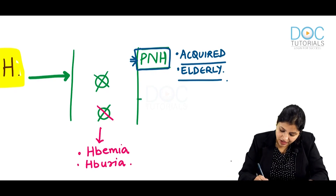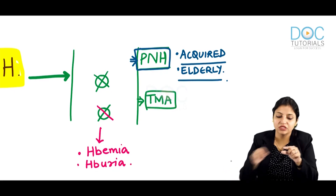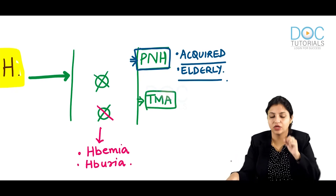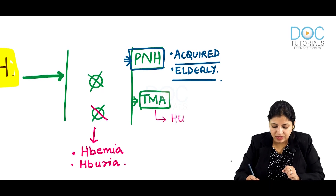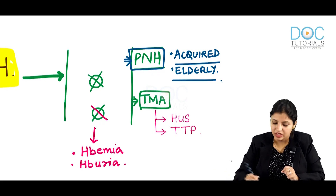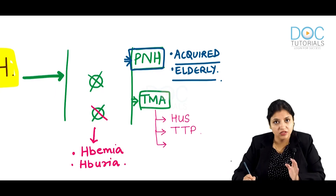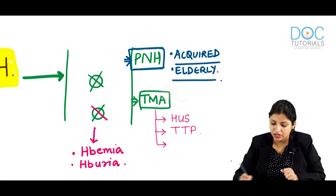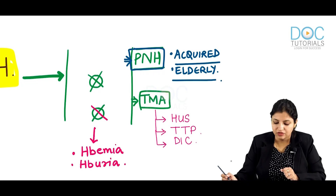The second important cause of intravascular hemolysis is TMA — thrombotic microangiopathy. This means there is a thrombus in small vessels, and as red cells pass through, they get lysed. Classical examples of TMA include HUS (hemolytic uremic syndrome), TTP (thrombotic thrombocytopenic purpura), and DIC — which can also cause intravascular hemolysis.